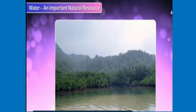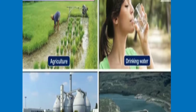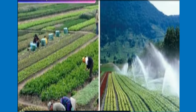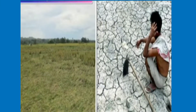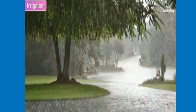Brackish water is not fit for any use. Our country mostly depends on monsoon rainfall for agriculture and other purposes. Agriculture needs a regular water supply; however, since rainfall is not uniform, this creates a lot of problems for our farmers who need water to irrigate their fields. For this reason, development of an irrigation system is necessary.